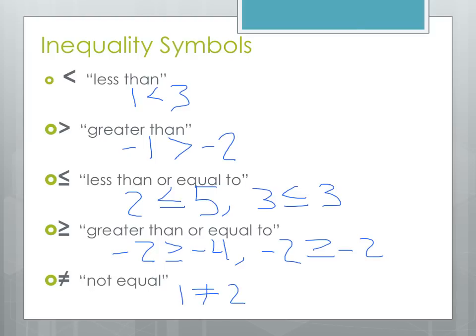There are a few tricks to help remember how the inequality signs work. If we're given a problem like 3 and 5 and want to place the correct symbol between them, I like to think of the inequality signs as an alligator. The alligator is hungry and always wants to eat the bigger number, so his mouth opens toward the larger of the two. Some people think of it as Pac-Man, and Pac-Man wants to eat the biggest number. They're a little silly, but if they work, who cares?